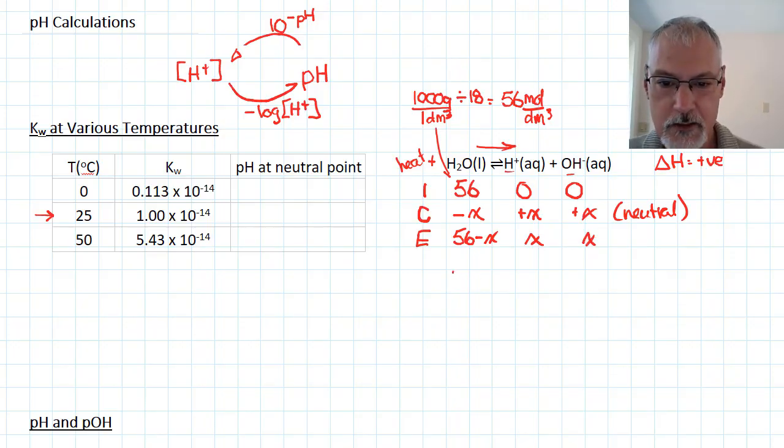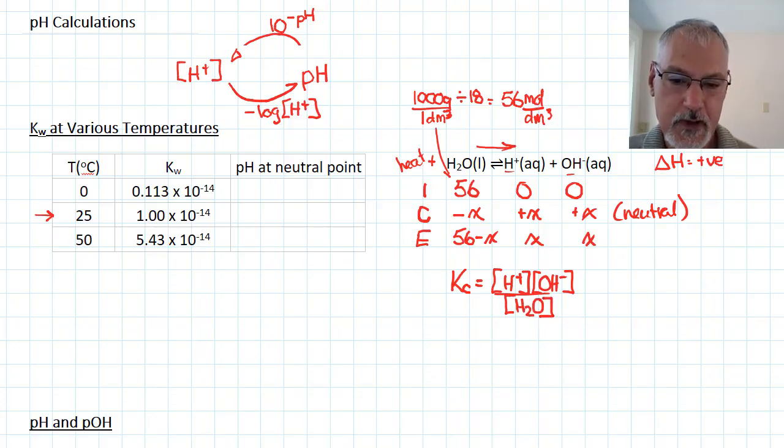The equilibrium constant for this reaction would be the concentration of H+ times the concentration of OH- over the concentration of water. Now, the concentration of water essentially remains unchanged. The small value of the equilibrium constant suggests that we can say that this is roughly 56, which means that this value never changes. Because it never changes, we can actually combine it with the equilibrium constant.